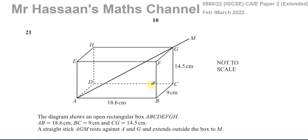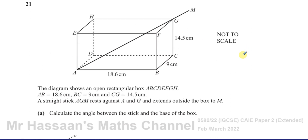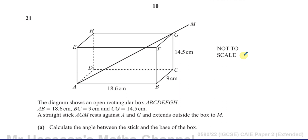Question 21 is about three-dimensional trigonometry. The diagram shows an open rectangular box ABCDEFGH. AB is 18.6 cm, BC is 9 cm, and CG is 14.5 cm — those are the length, width, and height of this cuboid. A straight stick AGM rests against A and G and extends outside the box to M. We need to calculate the angle between the stick and the base of the box.